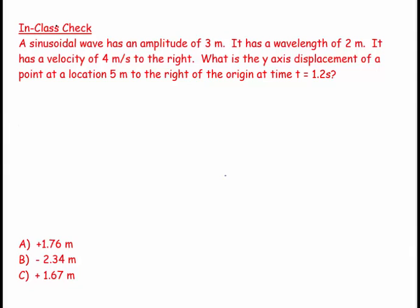Welcome. This question says a sinusoidal wave has an amplitude of 3 meters, has a wavelength of 2 meters, it has a velocity, it's traveling at 4 meters per second to the right, and then it asks us what is our y displacement of a point located 5 meters to the right of the origin by time t equals 1.2 seconds. So let's begin by visualizing it.